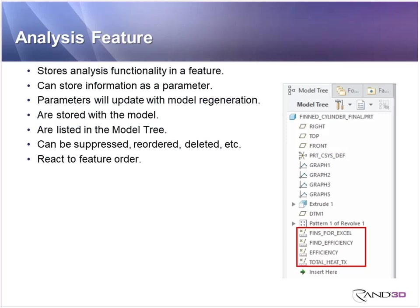As for analysis features, these are features in the model that calculate or measure something and then store that information as a feature in the model tree with parameters inside of it. There are several different types: basic measurement commands like distance or length, specific analysis features, and the mass property tool. Whatever you calculated — mass, volume, a distance — gets stored as a parameter value inside that analysis feature.